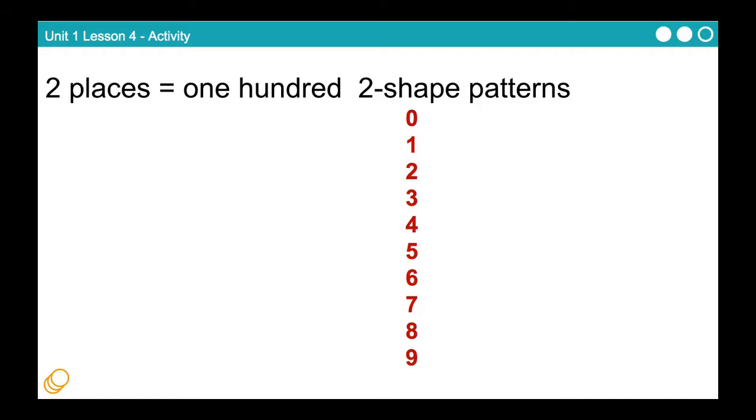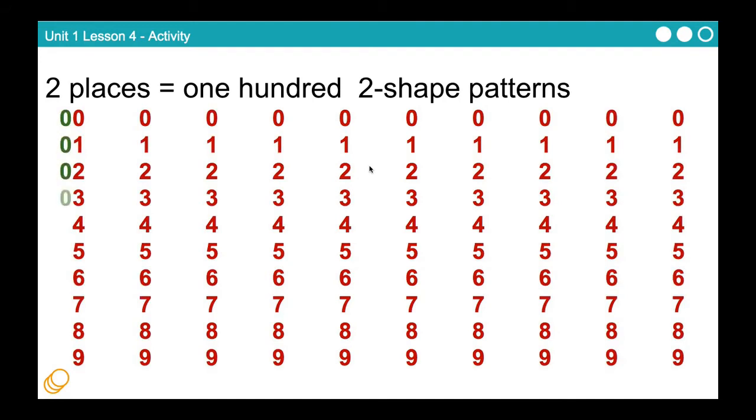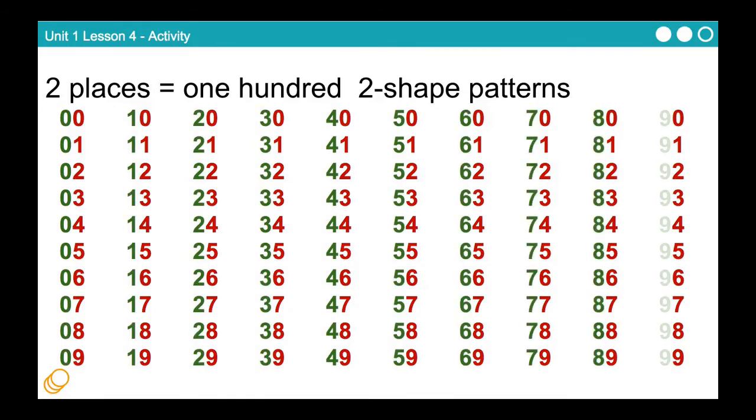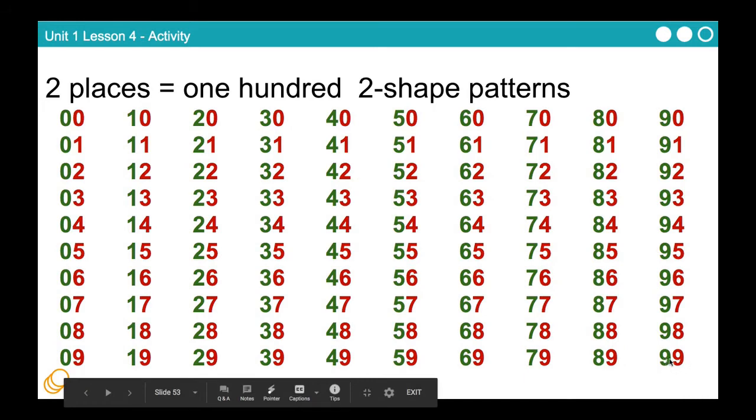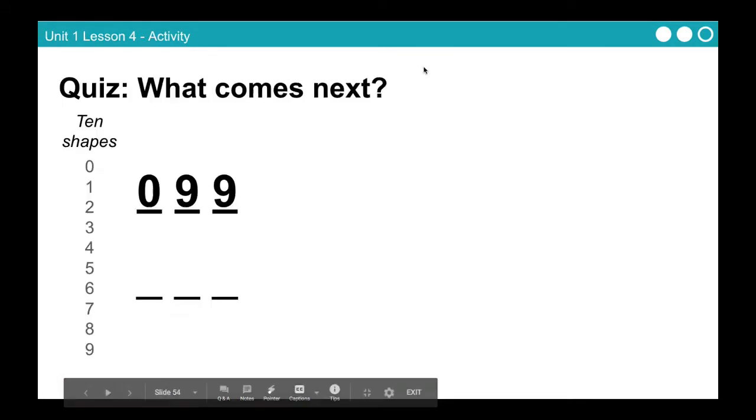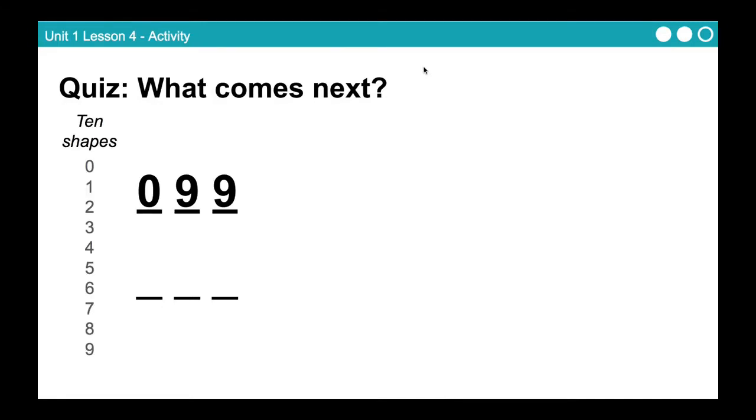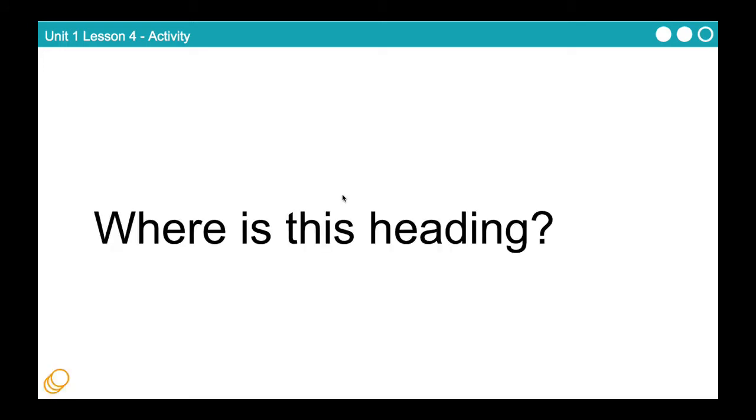Now, if you double the amount of digits that you can have, you can have 102 shape patterns. And here they are. Pay careful attention to what's happening here. So this looks just like circle circle. This looks just like square square. So, quick quiz. Don't overthink this. What comes next? What happens when we get to the end of our two digits? It rolls over. It becomes 100.